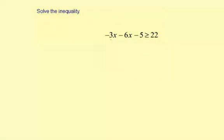Solve the inequality. Negative 3x minus 6x minus 5 is greater than or equal to 22.